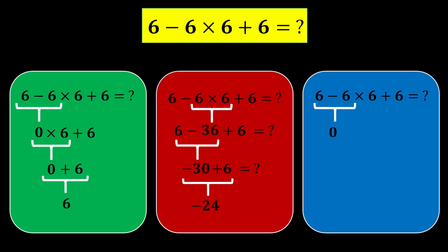The last person first calculates 6 minus 6, which becomes 0. Then they calculate 6 plus 6, which becomes 12. Finally, they multiply 0 by 12, reaching the answer 0. Now, in your opinion, which answer is correct — 6, negative 24, or 0? Write it in the comments.